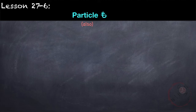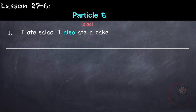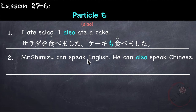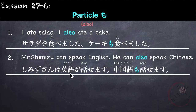Next is particle も meaning 'also.' We first learned about も in lesson 1, where it replaces particle は. It can also replace particles を and が. For example: I ate salad — サラダを 食べました。I also ate a cake — ケーキも 食べました (を replaced by も). Mr. Shimizu can speak English — 清水さんは 英語が 話せます。He can also speak Chinese — 中国語も 話せます (が replaced by も).